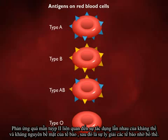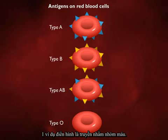Type II hypersensitivities involve interactions of antibodies and surface antigens of cells, followed by complement-assisted lysis of these cells. A typical example is mismatched blood transfusions.